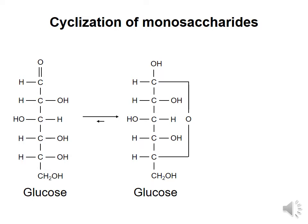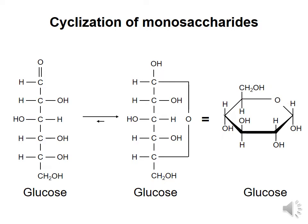The resulting ring structure is awkward to represent as a Fischer projection, so W. Norman Haworth developed the Haworth projection for cyclic monosaccharide structures. The ring structure is represented as a flat six-sided shape, viewed in perspective with the lower horizontal bond close to you and the upper horizontal bond further away. The chemical groups at each carbon are shown as either above or below the plane of the ring.